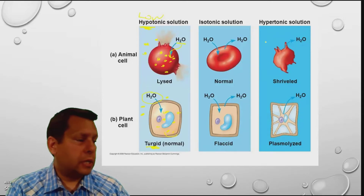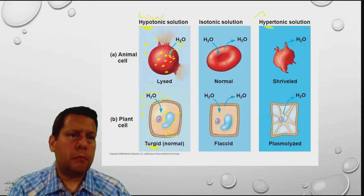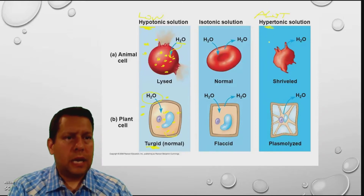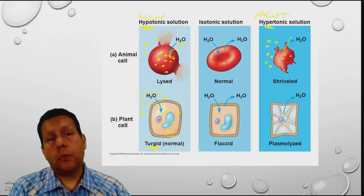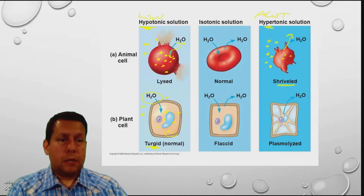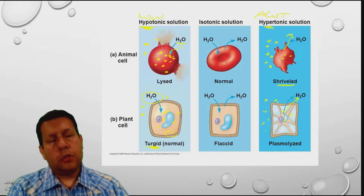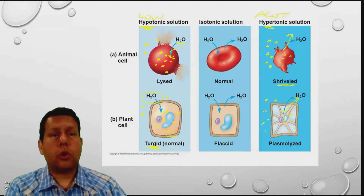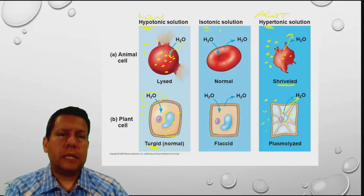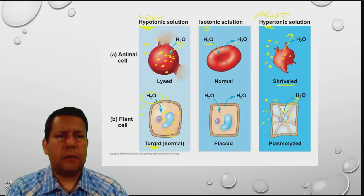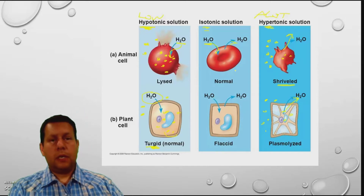In a hypertonic solution — hyper means a lot of solute — there's a lot of solute on the outside and only a few on the inside. Wherever there's more solute, water is going to follow, so that will make the animal cell shrivel up. Plant cells will do the same thing: it's a hypertonic solution, so there's a lot outside and a few inside. Water leaves and the inside of the cell shrinks, but the outside doesn't change because the cell wall is too strong. In an isotonic solution, it's equal inside and outside, so there's no net change.